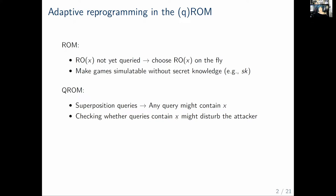Unfortunately, in the quantum random oracle model, things are not as easy. If we allow the attacker to post superposition queries, then in principle any query could already have contained X with some amplitude. Checking whether this was the case would have meant measuring the query, meaning altering the state and hence potentially disturbing the attacker. So an interesting question is: can we adaptively reprogram in the quantum random oracle model?